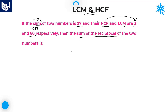In LCM and HCF, whenever the HCF of any two numbers is mentioned, those numbers must be multiples of the HCF. So, consider the two numbers are 3x and 3y — because the HCF is 3, therefore the two numbers are 3x and 3y.